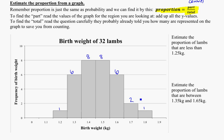And this is roughly normal in its shape, but what they're asking us here is to estimate the proportion of lambs that are less than 1.25 kgs. So let's think about what that is, 1.25 kgs.